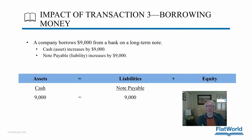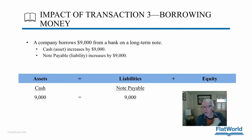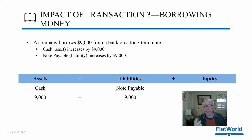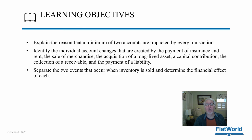A company is going to borrow $9,000 from a bank on a long-term note — in other words, a promissory note, a loan they will pay more than a year from now. That's where the phrase 'long-term' comes from. When you borrow money: number one, cash goes up — you've got cash you didn't have before. Number two, you've given birth to a liability because that bank is going to want their money back. So cash goes up by $9,000 and liabilities increase by $9,000. No effect on equity — borrowing money doesn't affect equity; it's not earning revenues or incurring expenses, it's creating a liability.